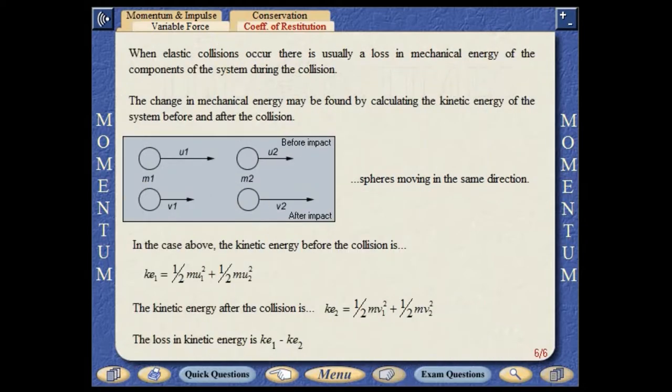When elastic collisions occur, there is usually a loss in mechanical energy of the components of the system during the collision. The change in mechanical energy can be found by calculating the kinetic energy of the system before and after the collision.